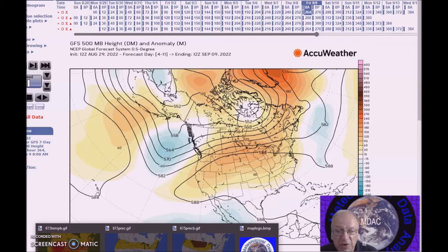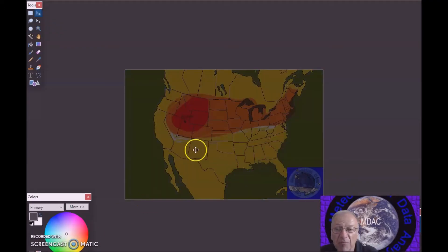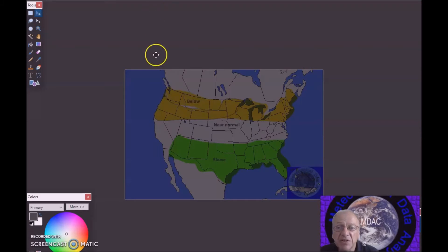For this forecast period I'm calling for above normal temperatures for much of the country, and I'm forecasting the anomalies highest 12 degrees above normal in some parts of the west. For precipitation, calling for below normal precipitation here, probability of occurrence 35 percent, above normal precipitation forecast for this region, probability of occurrence is 35 to 40 percent.